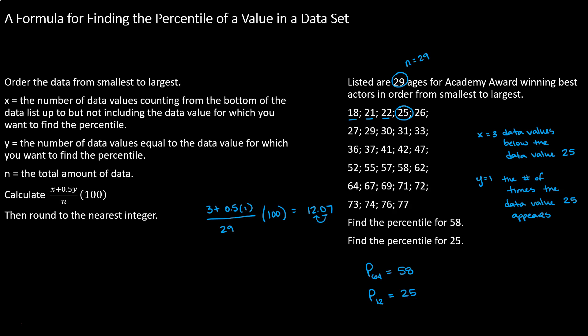So again just to summarize, we can use this quick formula to calculate the percentiles of different data values in a data set. All we need to do is count the number of values below the one that we're looking at and the number of times that that data value repeats. Also we need to know the number of data values in the data set. Plug those things into our formula and then round the result.